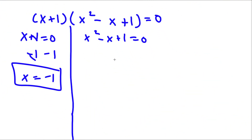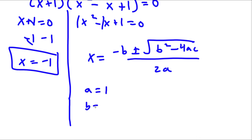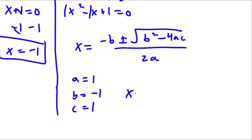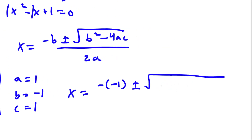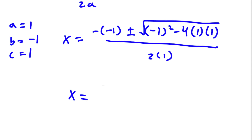Now for x squared minus x plus 1 equals 0, we are going to be using the quadratic formula to solve this, which is negative b plus or minus the square root of b squared minus 4ac divided by 2a. So in this case, a is equal to 1, b is equal to negative 1, and c equals 1. So I have negative b, so negative negative 1, plus or minus the square root of b squared — so negative 1 squared — minus 4 times a times c, all over 2a.